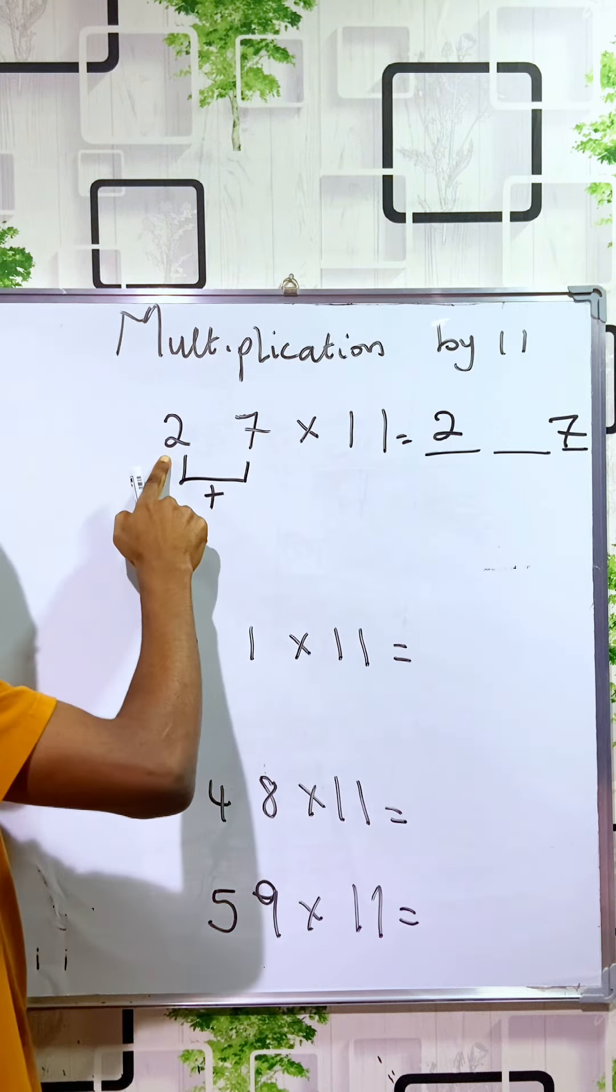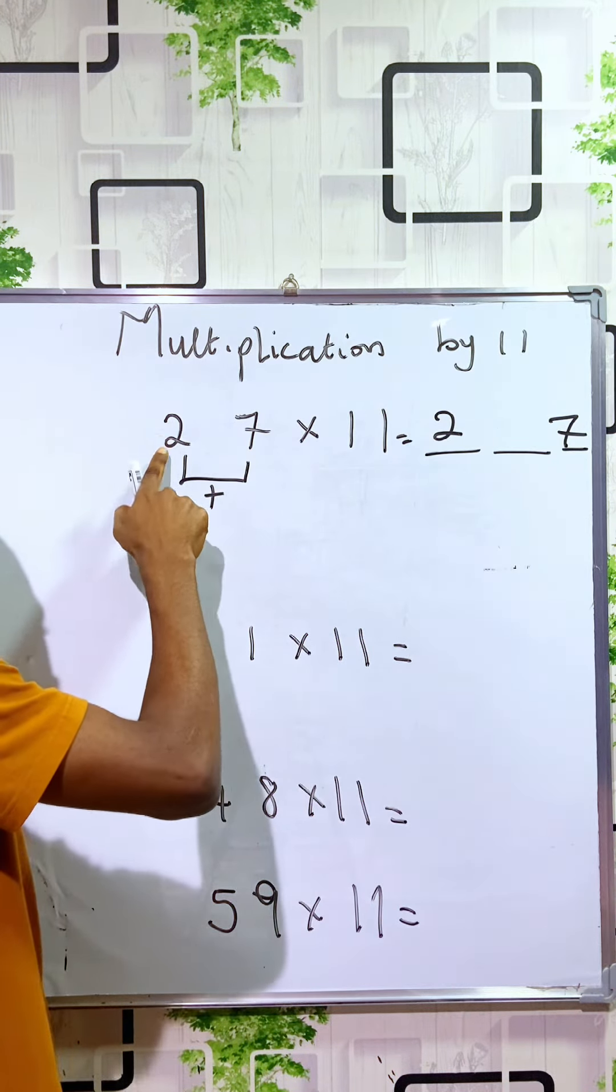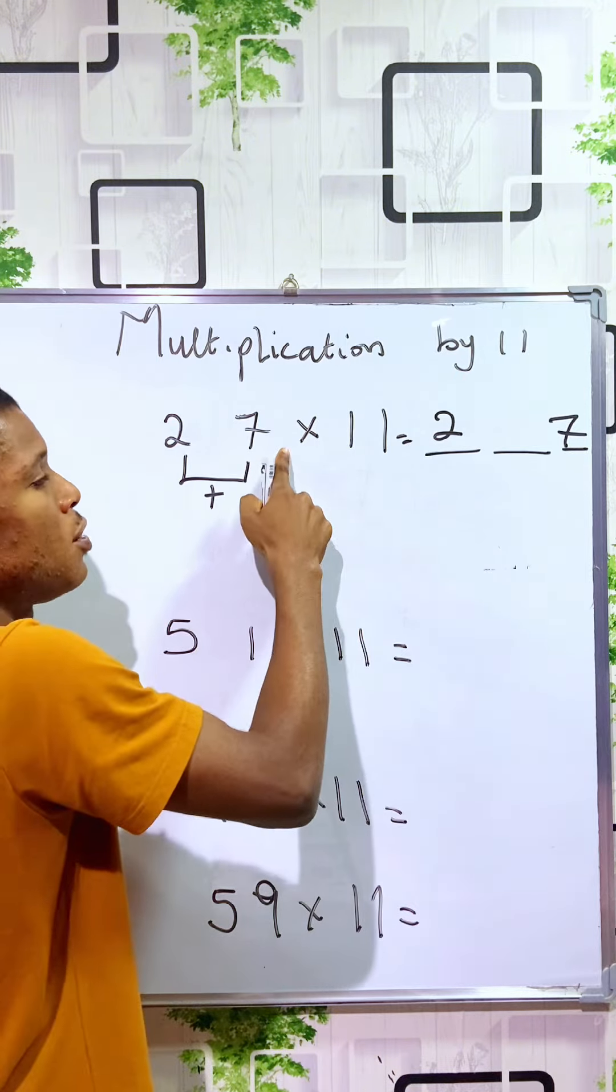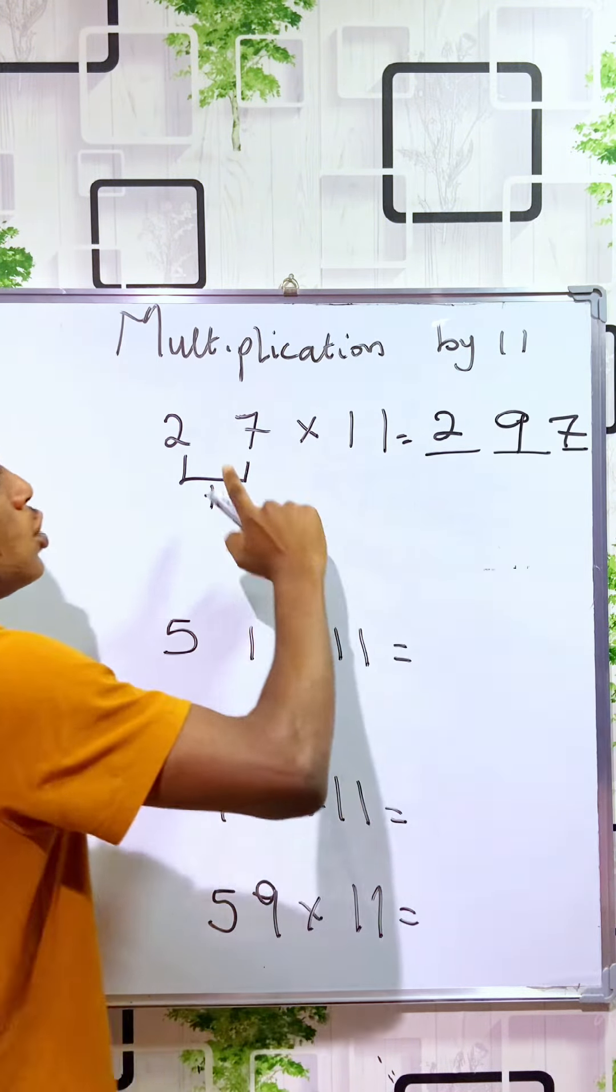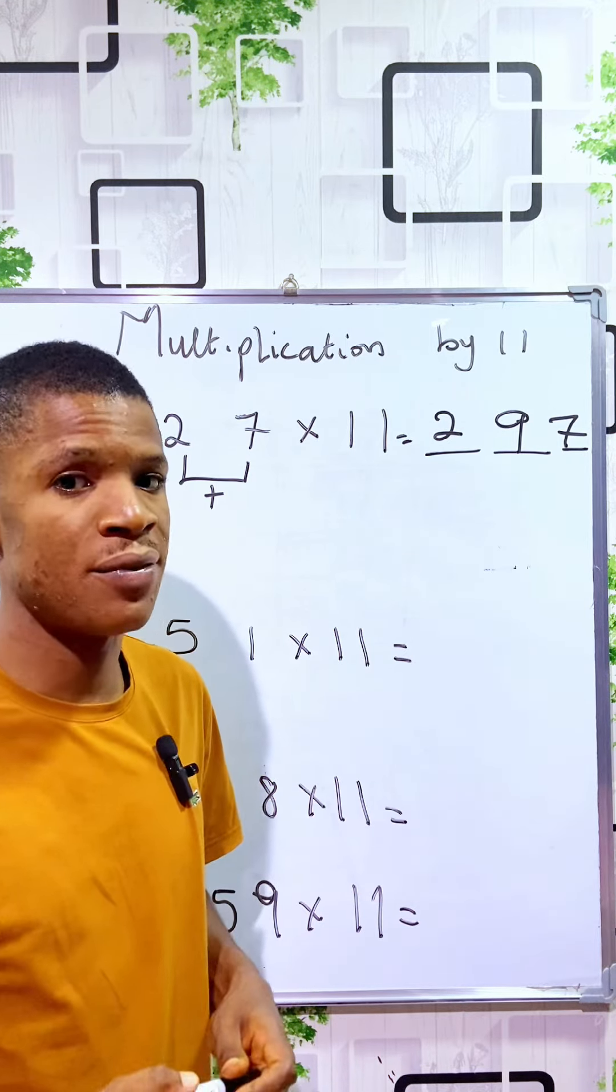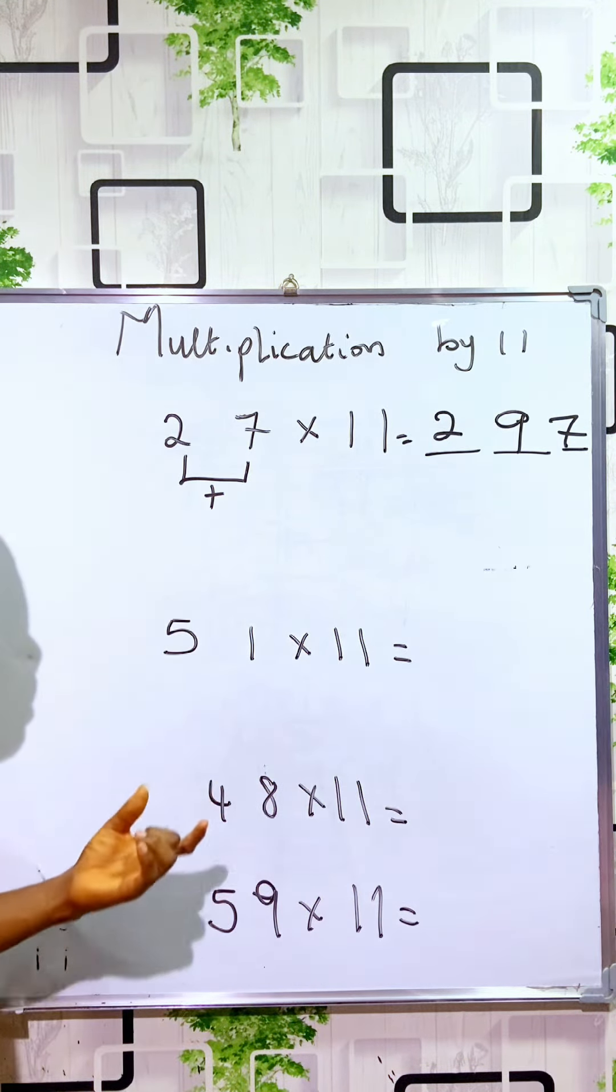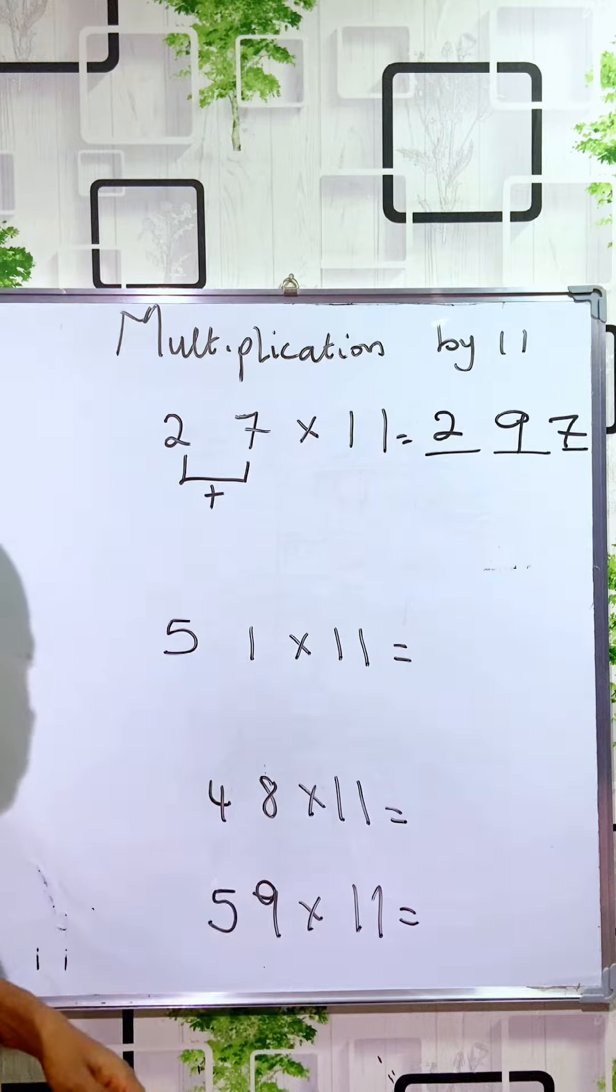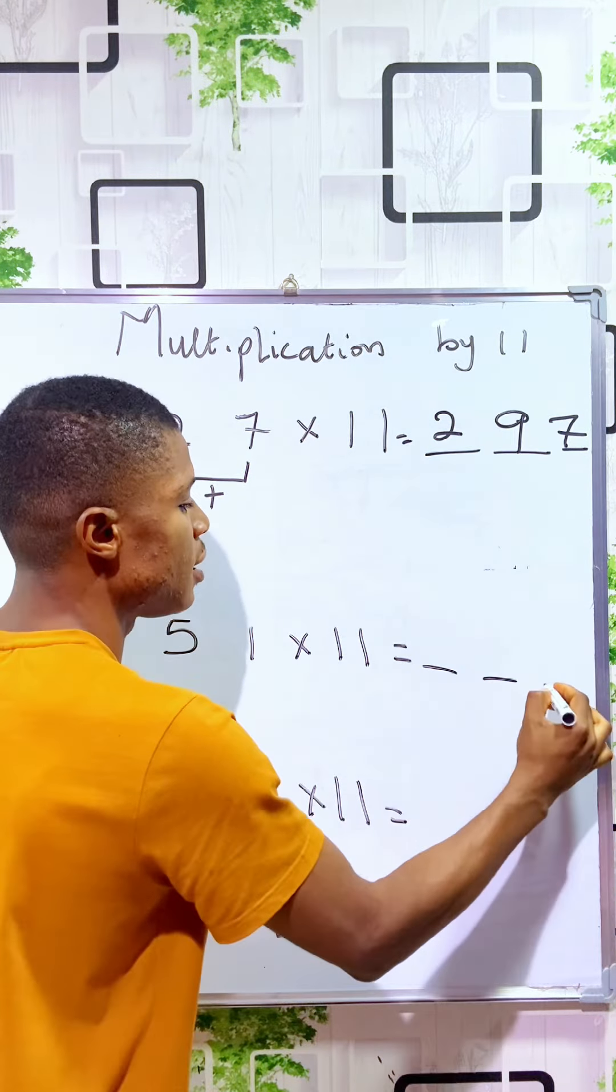You add 2 to 7, giving you 9. So 27 times 11 is 297. For the second digit, 51 times 11, we just have to create three spaces again.